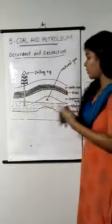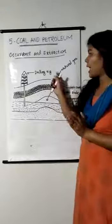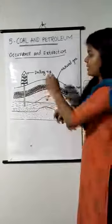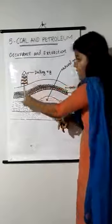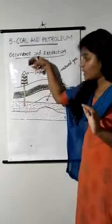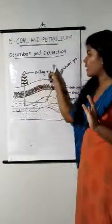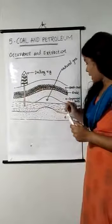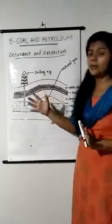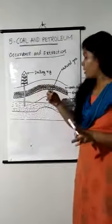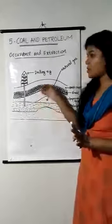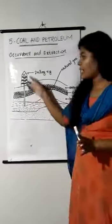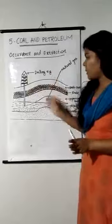To take petroleum out from between these impervious rocks, an equipment called the drilling rig is used. The drilling rig digs into the earth's crust, creating oil wells — holes dug deep into the earth. When we drill the earth's surface, natural gas comes out first with high pressure. When that pressure minimizes, petroleum gradually comes out of the impervious rocks.